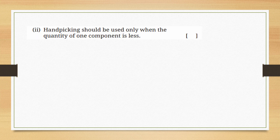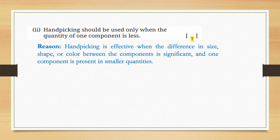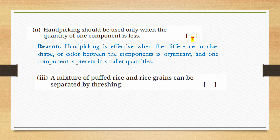Handpicking should be used only when the quantity of one component is less. This statement is true. Handpicking is effective when the difference in size, shape, or color between the components is significant and one component is present in smaller quantities.